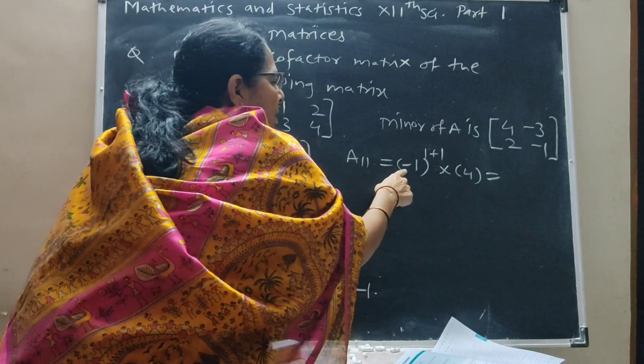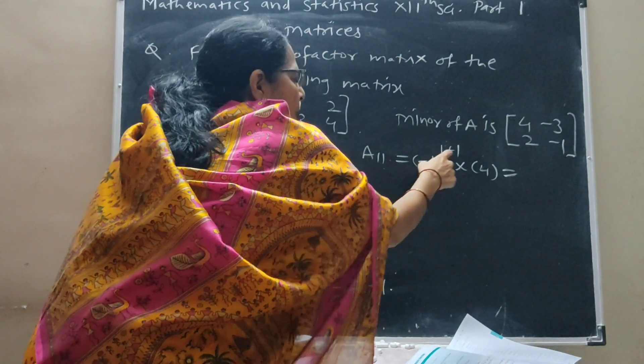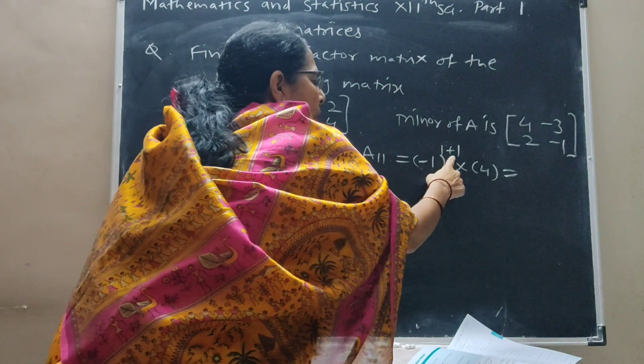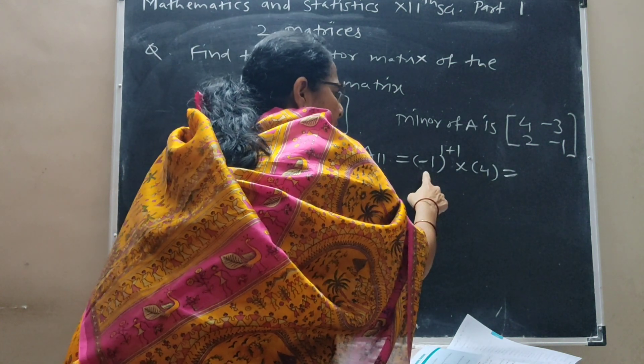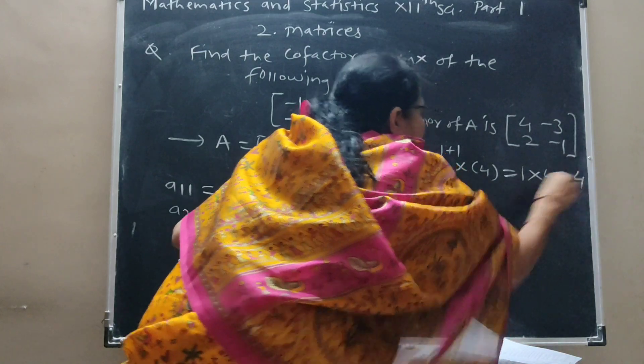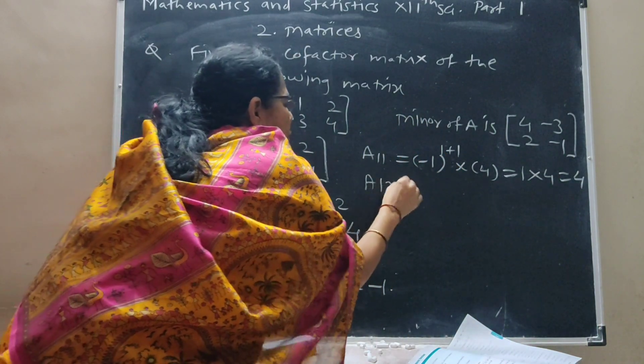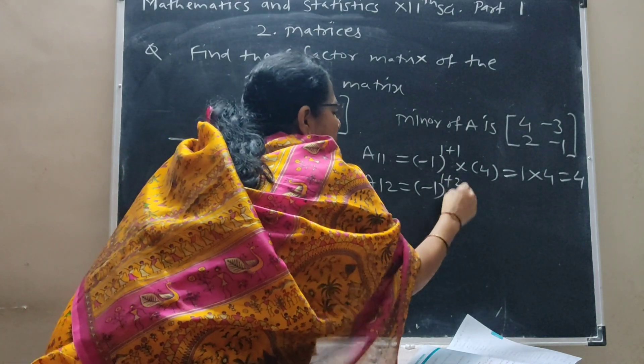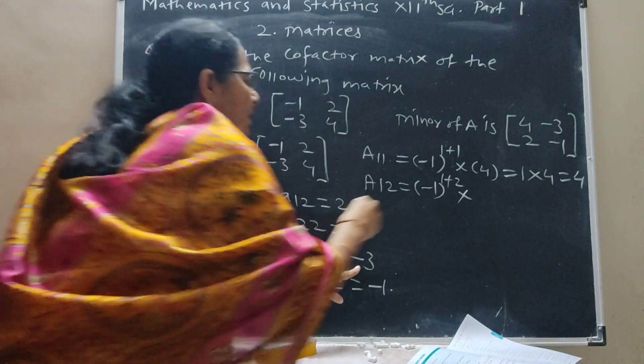So A12 equals minus 1 raised to 1 plus 2 times the respective minor minus 2.